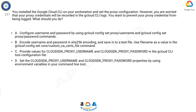Question 251: You installed the Google Cloud CLI on your workstation and set the proxy configuration. However, you are worried that your proxy credentials will be recorded in the Cloud CLI logs. You want to prevent your proxy credentials from being logged. What should you do? Option A: Configure username and password by using cloud config set proxy/username and cloud config set proxy/password commands. Option D: Encode username and password in SHA-256 encoding and save into a text file.